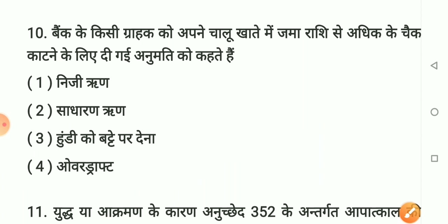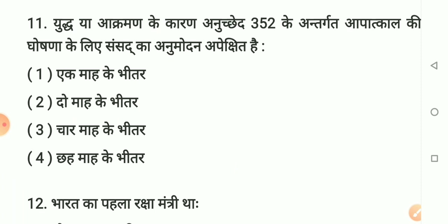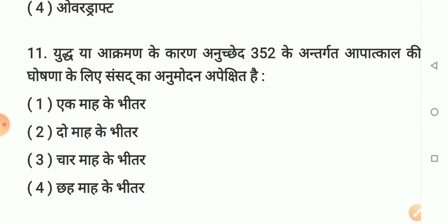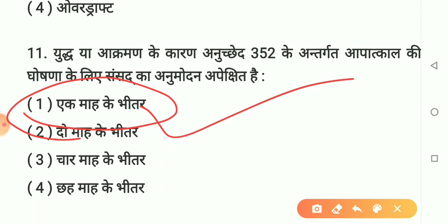Question number 11: Yuddh ya aakraman ke kaaran Anuched 352 ke antargat aapatkaal ki ghoshna ke liye Sansad ka anumodan kitne din ke bheetar apekshit hai? Option 1 - ek maah ke bheetar. Option 2 - do maah ke bheetar. Option 3 - chaar mahine ke bheetar. Option 4 - chhe maah ke bheetar. Sahi answer hai option 1: ek maah. Yuddh ya aakraman mein Anuched 352 ke aapatkaal ke liye Sansad ka anumodan ek maah ke bheetar chahiye. Yaad rakhiye.